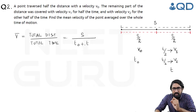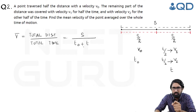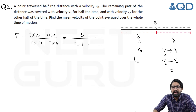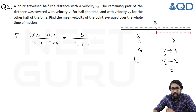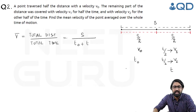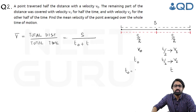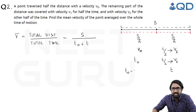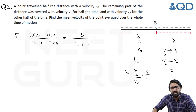If we find expressions for t0 and t in terms of s, we can solve this problem. In the first part, s/2 distance was travelled with velocity v0 in time t0. So t0 equals distance divided by speed, that is s/2 divided by v0, which gives t0 = s/(2v0).